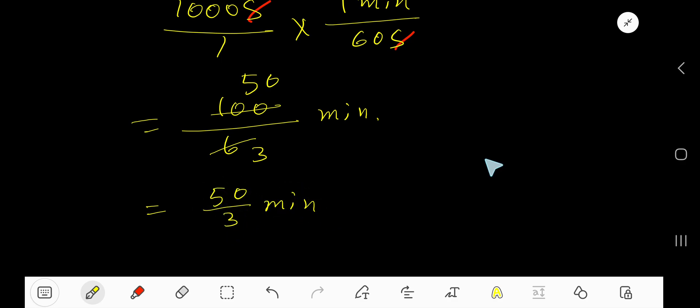Let me divide 50 by 3. 3 goes into 5, 1 time. 1 times 3 is 3. Subtract to bring down this 0. 3 goes into 20, 6 times. 6 times 3 is 18. Subtract. Take the decimal here and add zeros.